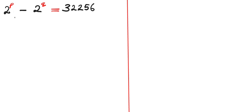In order for us to find the value of p and q, which are all natural numbers, the first thing is for us to look at this equation carefully. If you look at this equation, you will discover that 32,256 is actually greater than 0, meaning that 2 to the power of p is actually greater than 2 to the power of q.